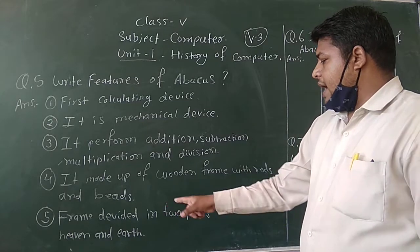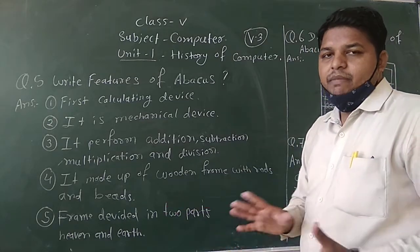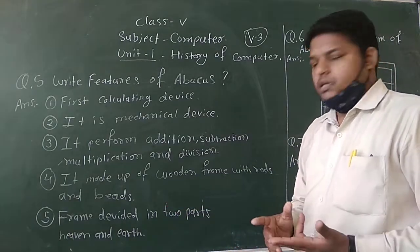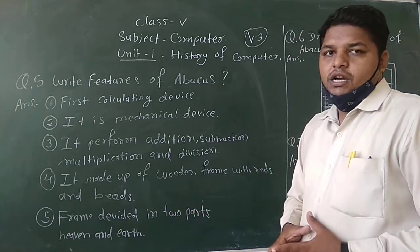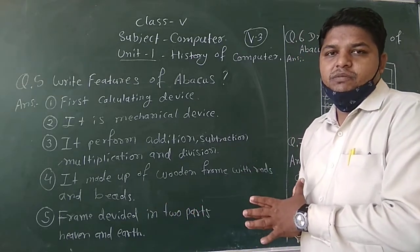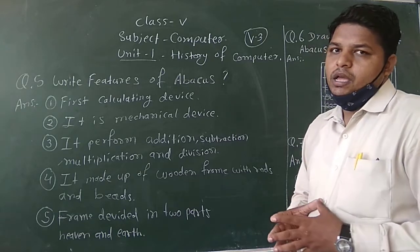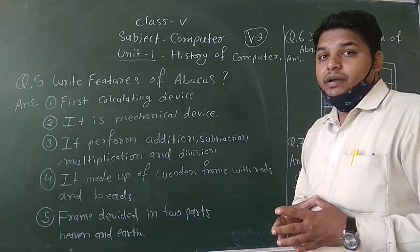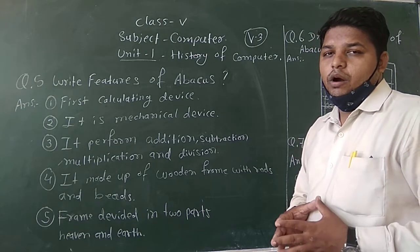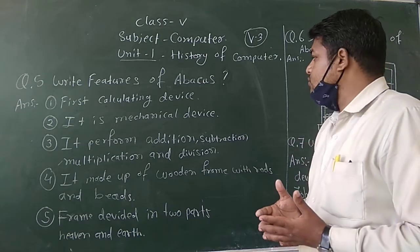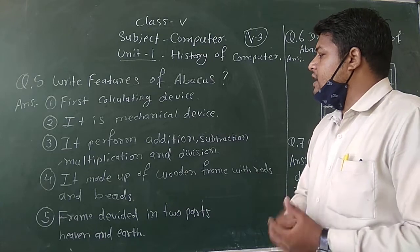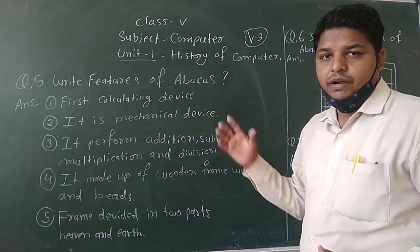Then frame is divided into two parts, one is heaven and second is earth. There is a mechanism that frame is divided into two parts, that is heaven and earth. If you are using Abacus device, then you know all those things, how to use it and how the calculation can be done with this particular device.